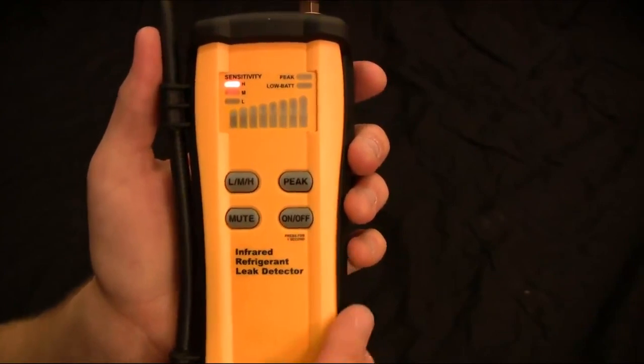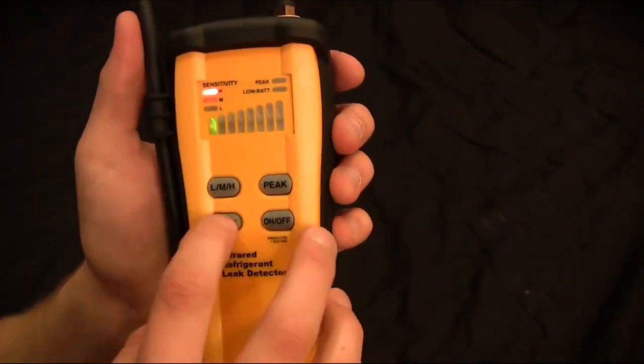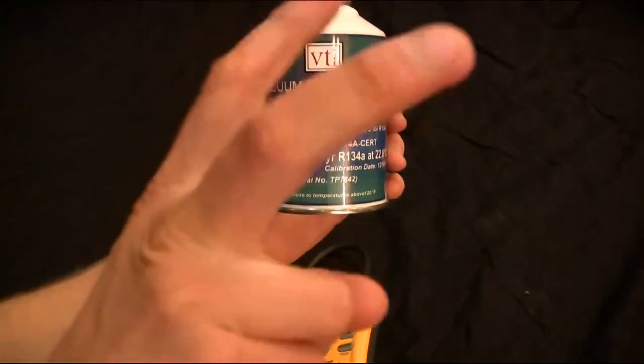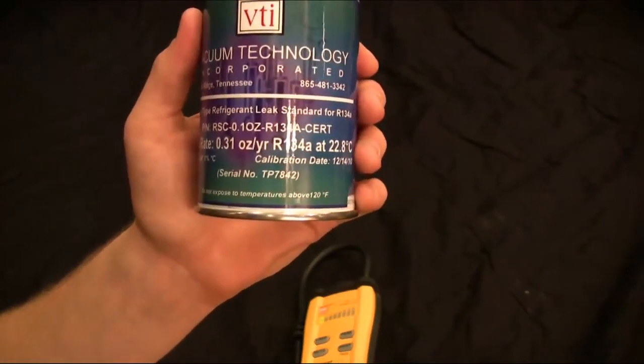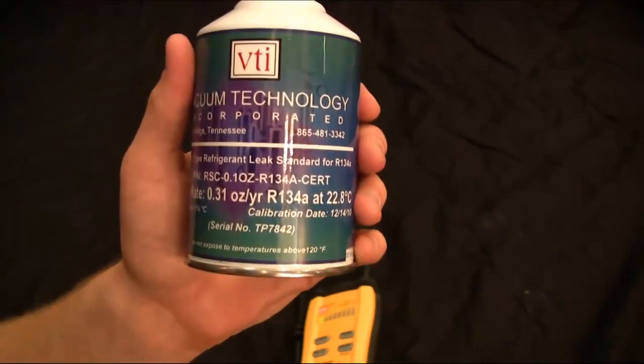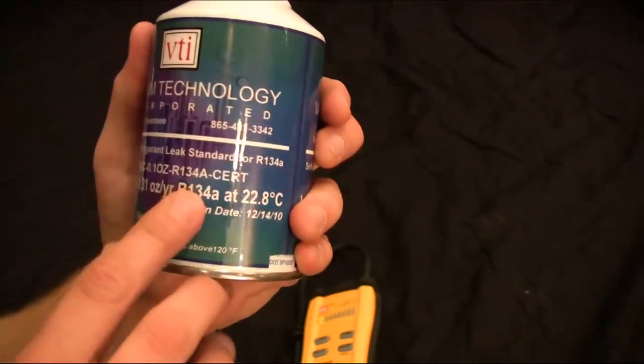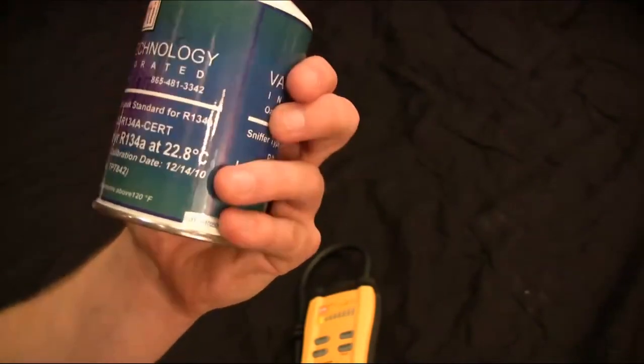Alright, that's the display. So what we're going to do now is actually sense some leaks. I'm going to go ahead and unmute it. Now the first leak we're going to sense is our big leak, .31 ounces per year leak rate. So it's still very small refrigerant leaking out of this bottle. And this is our 134A right now.